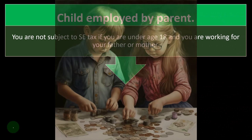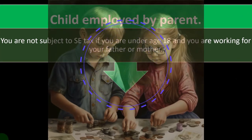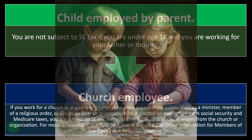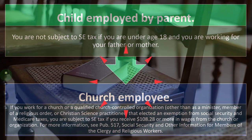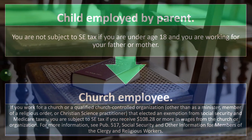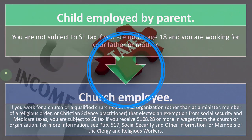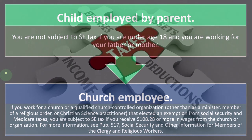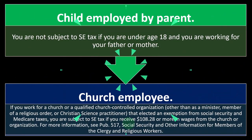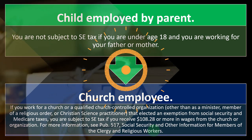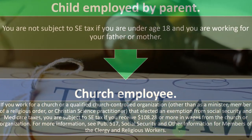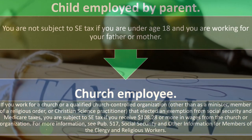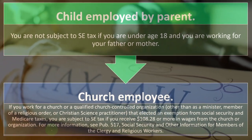Child employed by parent: you are not subject to SE tax if you are under age 18 and working for your father or mother. Church employees: if you work for a church or qualified church-controlled organization — other than as a minister, member of a religious order, or Christian Science practitioner — that elected an exemption from Social Security and Medicare taxes, you are subject to SE tax if you receive $108.28 or more in wages from the church. See Publication 517 for more information.